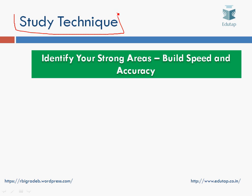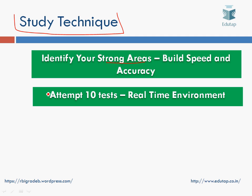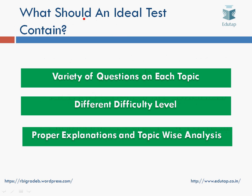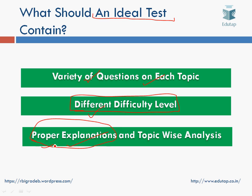For your study technique, identify your strong and weak areas by attempting tests in a real-time environment. After at least 10 tests you will be able to identify both. Improve your weak areas — don't leave them — and make your strong areas even stronger. An ideal test series should contain a variety of questions on each topic, different difficulty levels, and proper explanations so you can identify weak areas and grasp concepts. Topic-wise analysis and explanations are a must.